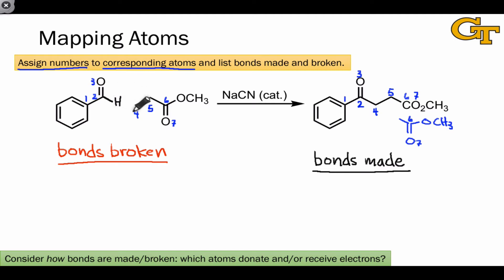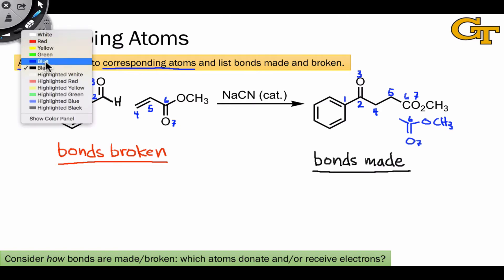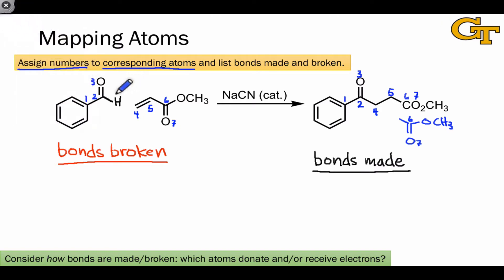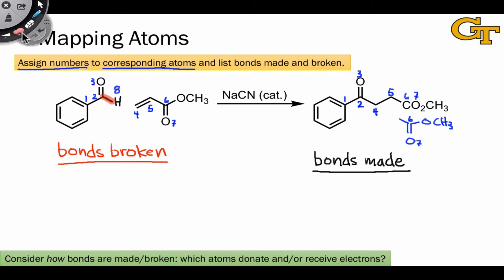There's a bond between carbon two and a hydrogen that's not shown explicitly, but since carbon two contains a new bond to another carbon in the product, this bond breaks. So let's map that hydrogen atom, noticing that it appears not to have a counterpart in the products just yet — but we'll get there. Let's note that as our first bond broken: the carbon-2 hydrogen-8 bond.